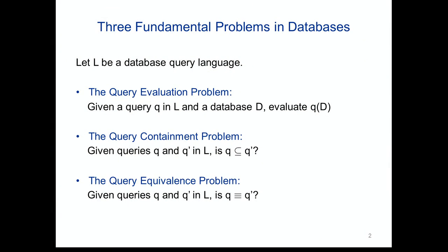The first is the query evaluation problem: given a query Q and a database D, evaluate Q on D. If Q is a Boolean query, this is a decision problem, otherwise a problem with an output relation. The query containment problem asks, given two queries Q and Q prime, is one contained in the other — are the answers of the first query on every database contained in the answers of the second? And the query equivalence problem asks whether the queries always give the same answers on every database.